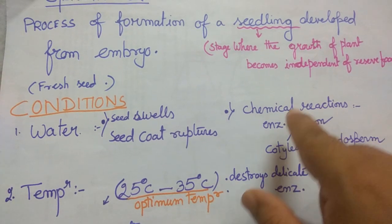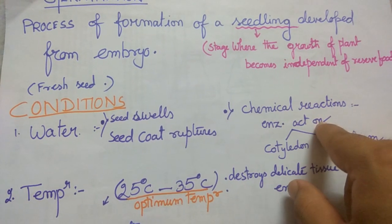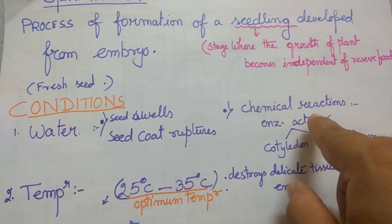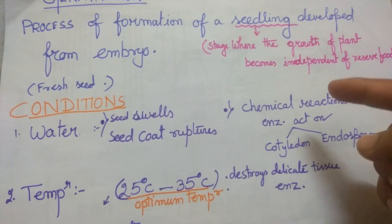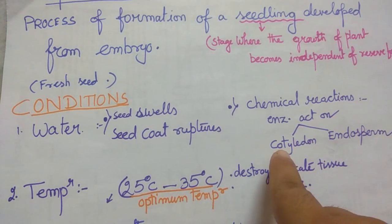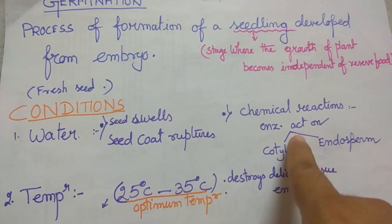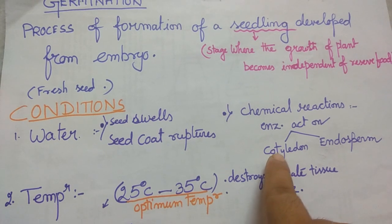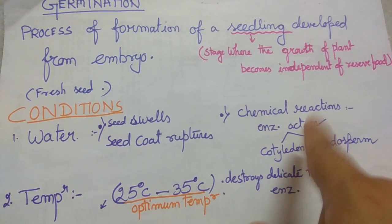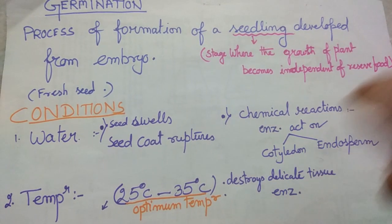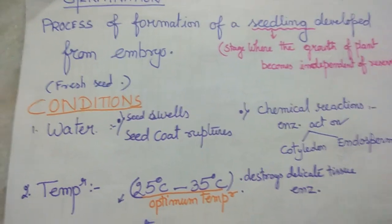The chemical reactions start because reserved food material and enzymes are present. The reserved food material dissolves and enzymes start acting on the cotyledon and the endosperm, so that they can dissolve and give nutrients to the developing embryo.